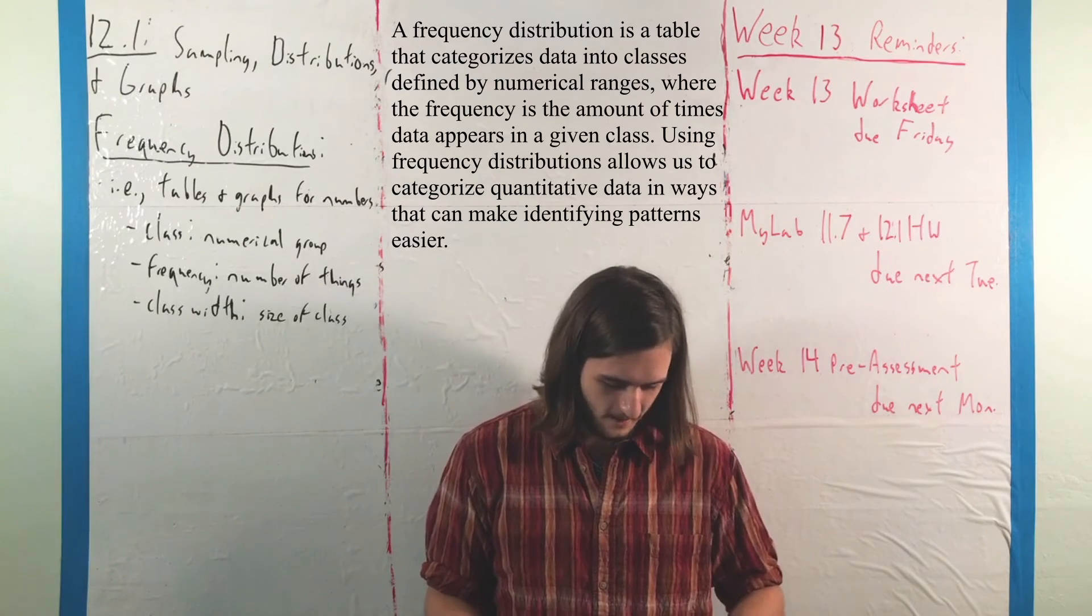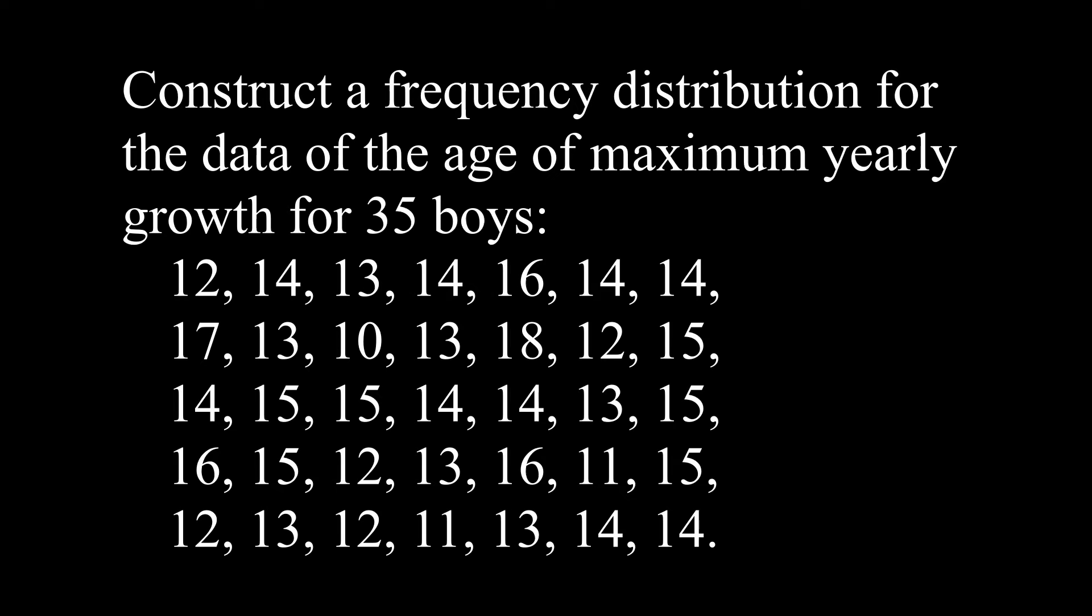But anyway, let's look at an example here, where what we want to do is construct a frequency distribution for the data of the age of maximum yearly growth for 35 boys, where we get this string of 35 numbers that we're going to be working with here.